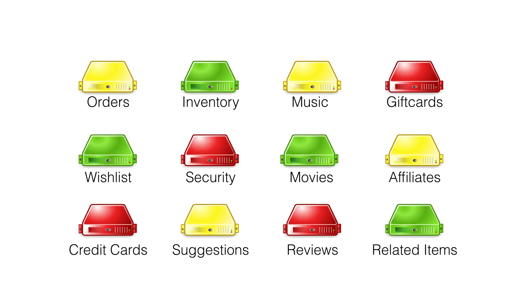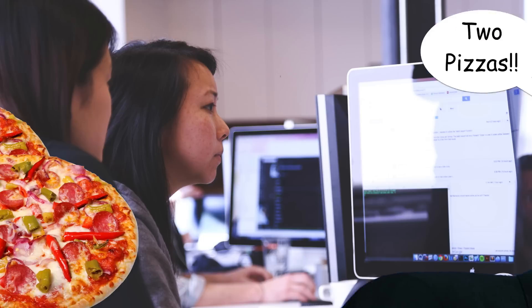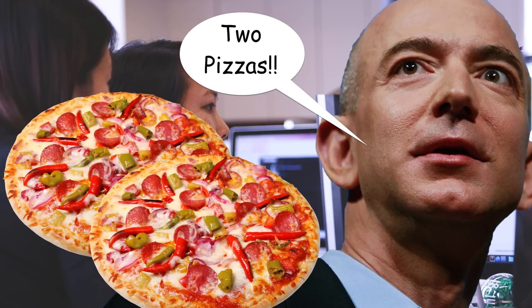Breaking our system into small parts also allows each microservice to focus on a single business capability. One benefit of this is we can have a small team focused on a simple task. Jeff Bezos from Amazon created the two-pizza rule: the ideal size for a microservices team is one that you can feed with two pizzas.